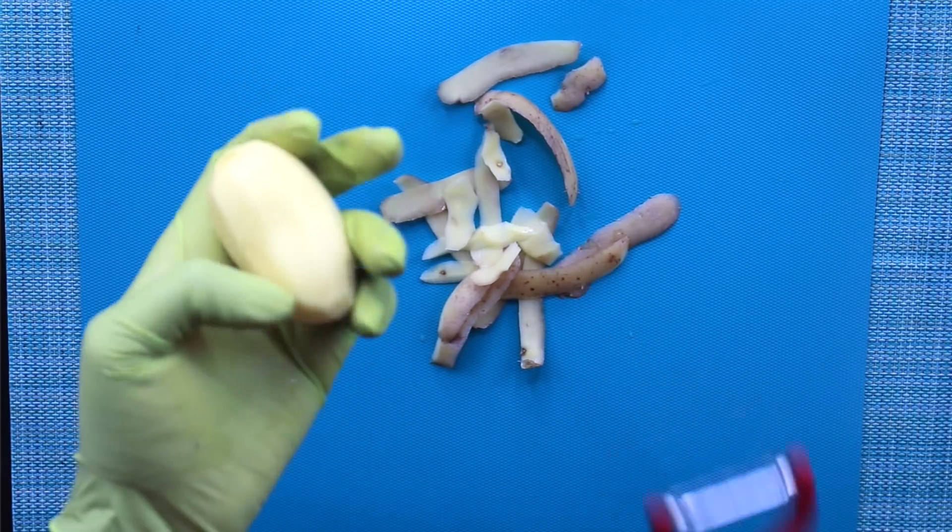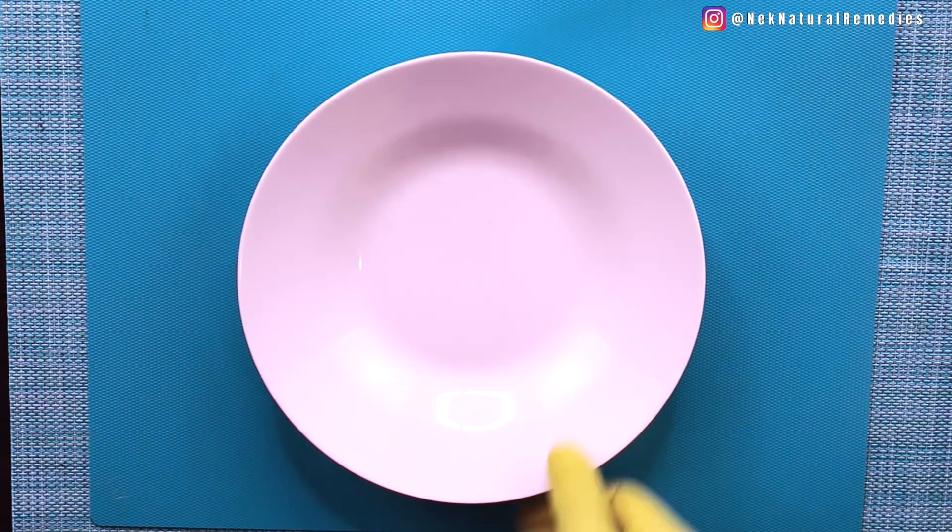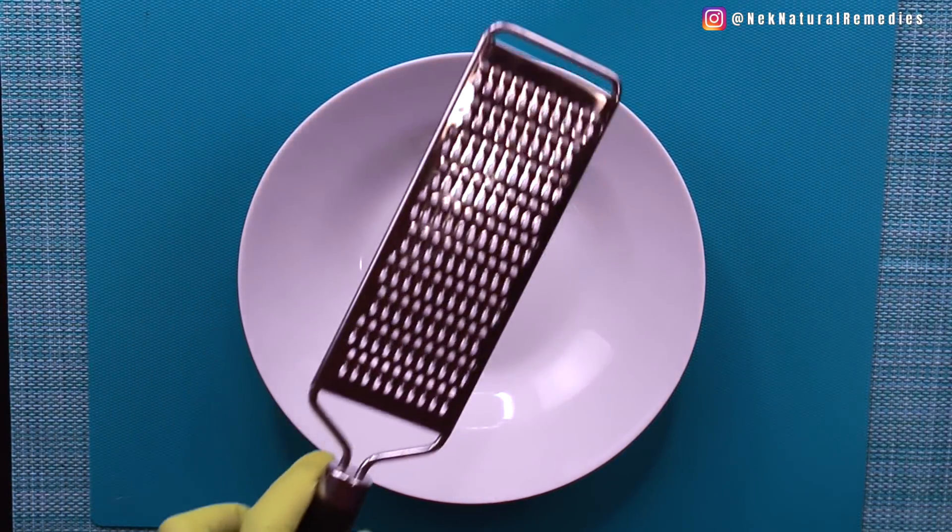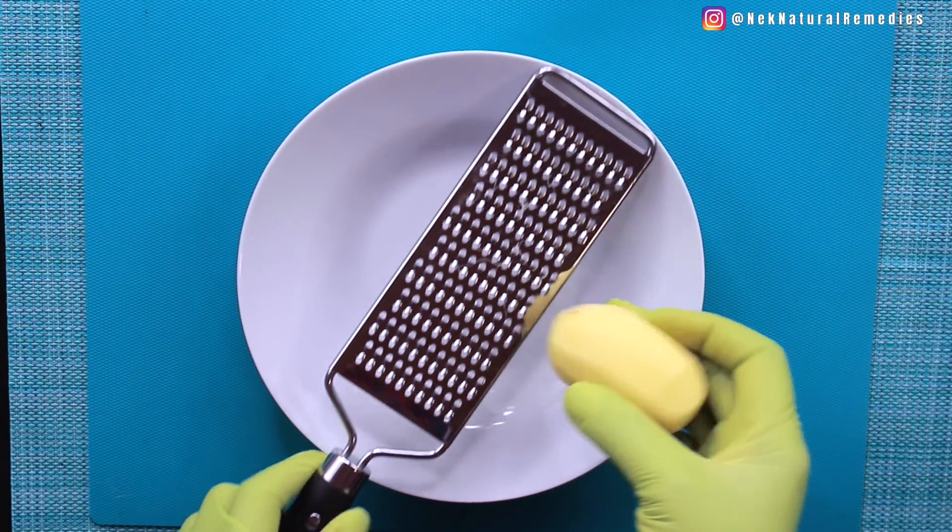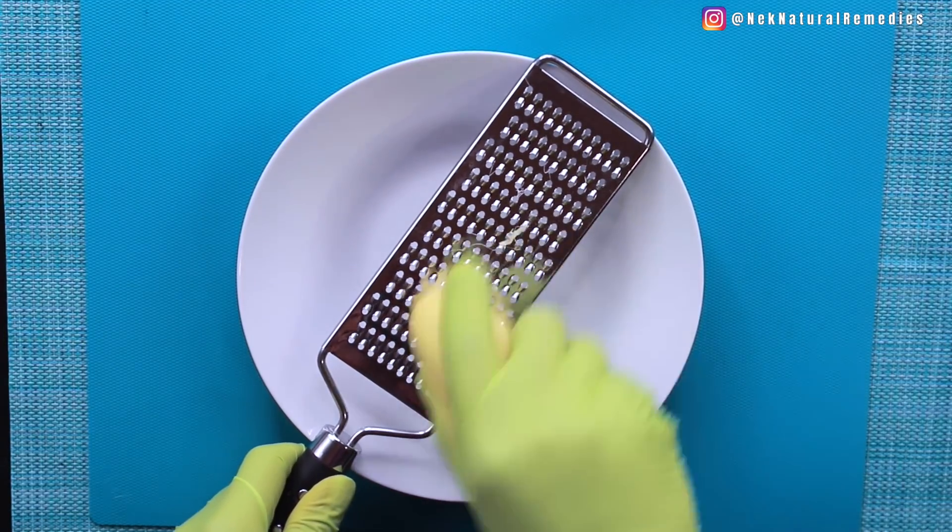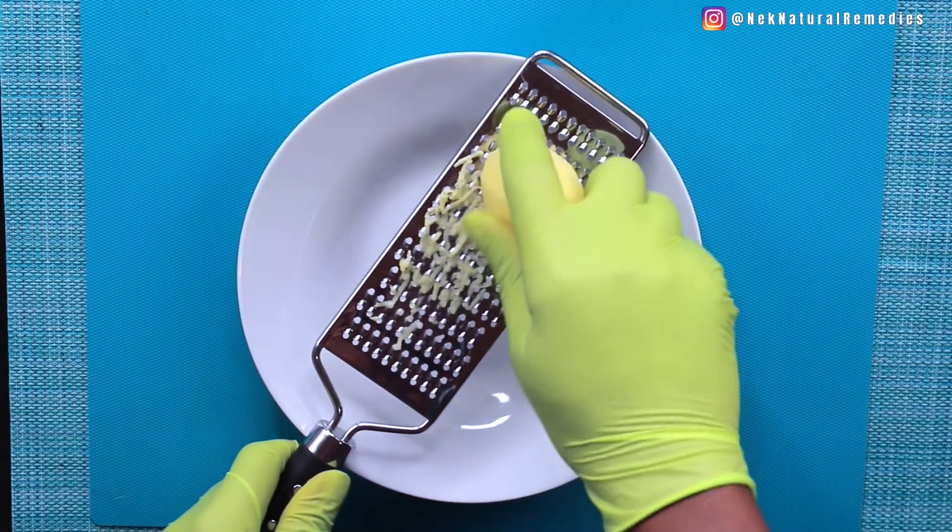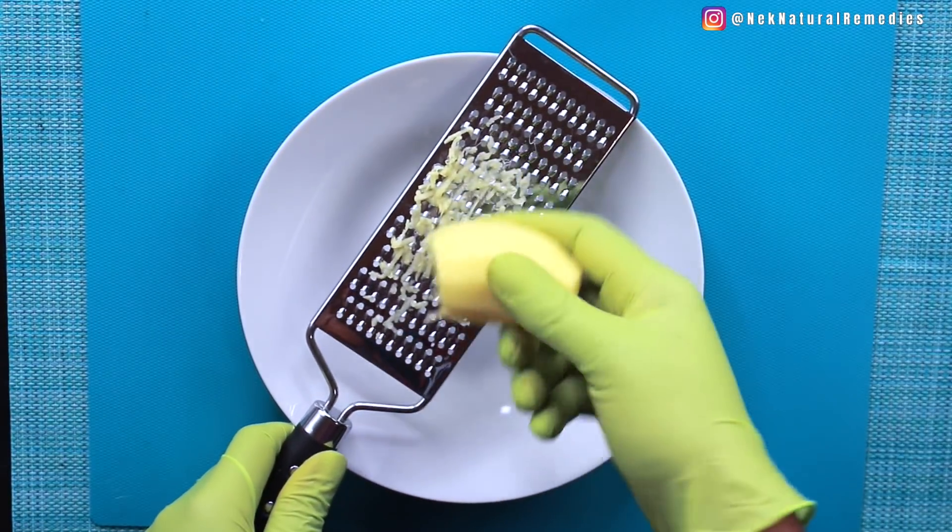So after peeling it, you get a grater and grate it. You can grate or blend it so that you can extract the juice from this wonderful root vegetable that is very good for the skin.